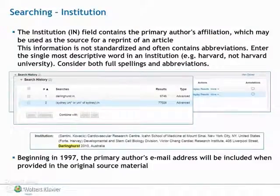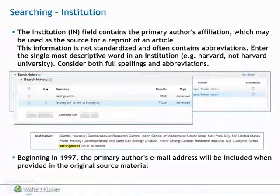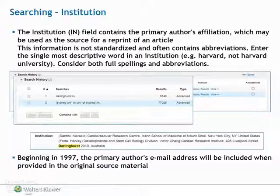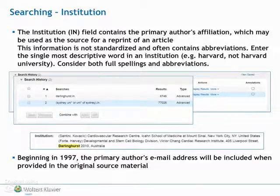The Institution field contains the primary author's affiliation, which may be used as a source for a reprint of the article. This information is not standardized and often contains abbreviations. Enter the single most descriptive word in an institution name and consider both full spellings and abbreviations. Beginning in 1997, the primary author's email address may be included when provided in the original source material.